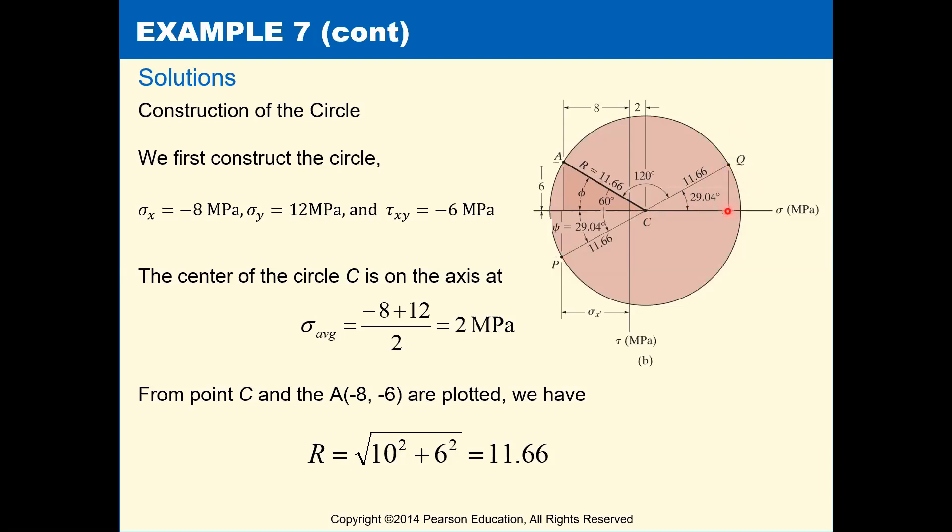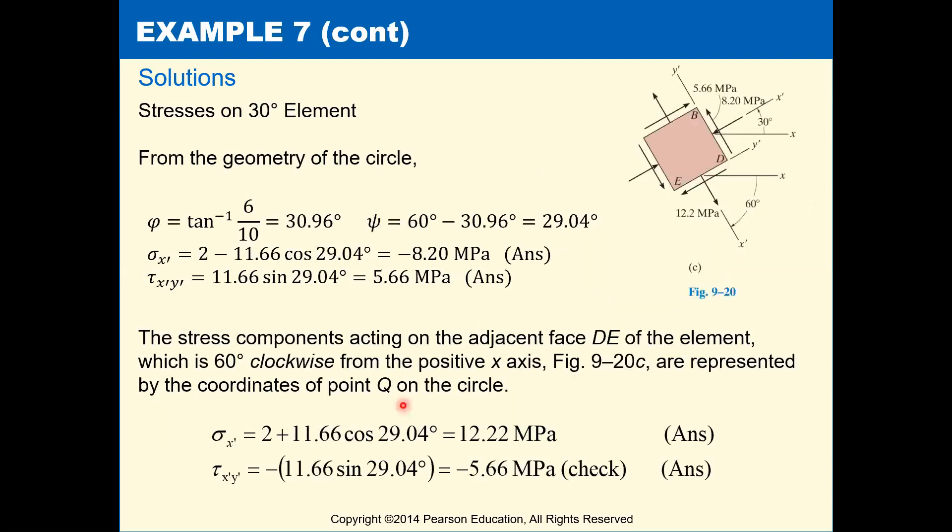But remember, this is going to be a negative tau x' y' because we're going in the negative tau direction here. So you get 12.22 tensile and a negative 5.66 for tau x' y' and that's shown here on this face. Positive 12.2 and a negative 5.66. They call this x' here, but normally we would just call that the y' direction like is shown here. So don't be confused by that technicality.